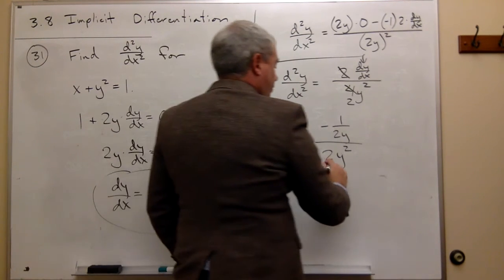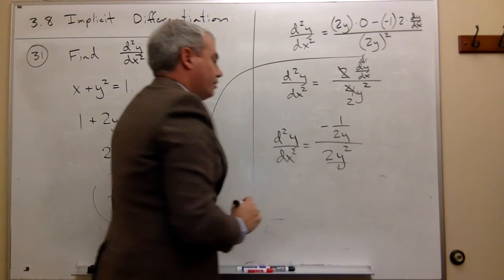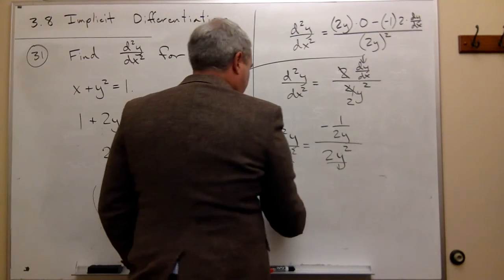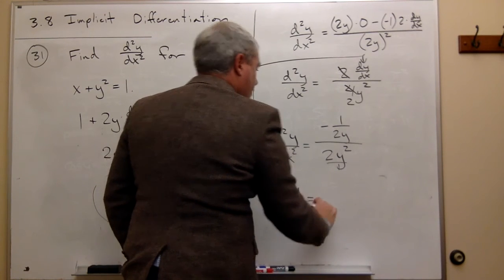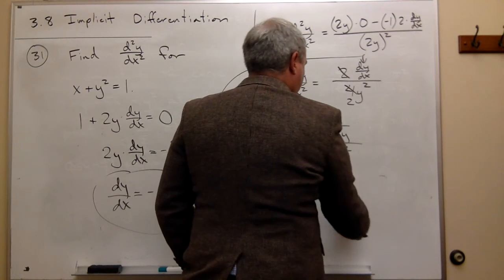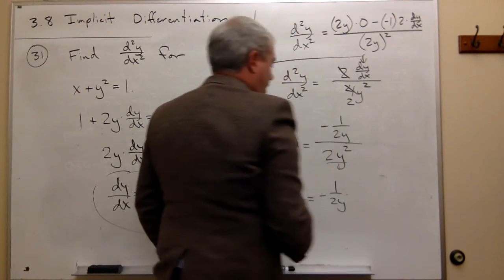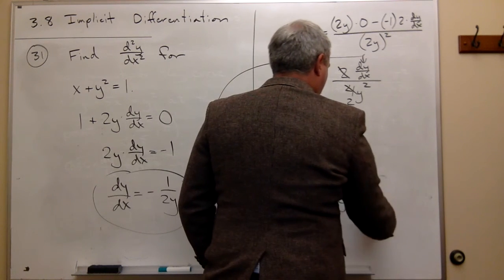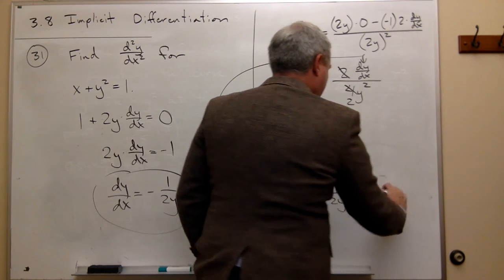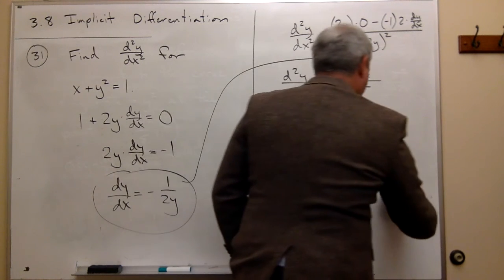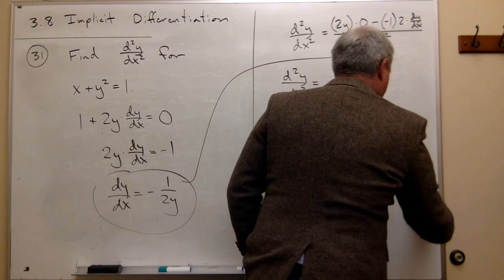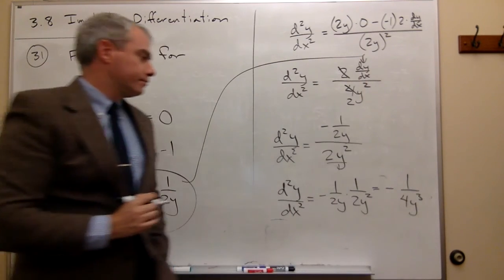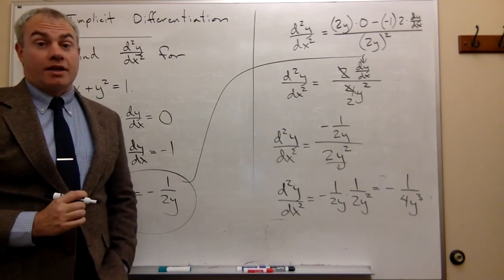And if I like to, I could put that over 1, flip and multiply, and I get the d squared y over dx squared is equal to negative 1 over 2y times 1 over 2y squared. In other words, it's negative 1 over 4y cubed. And that's my answer.